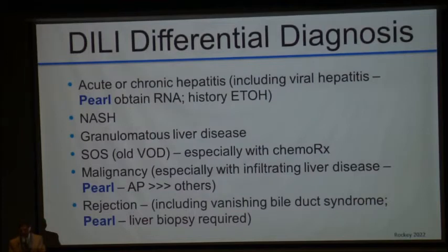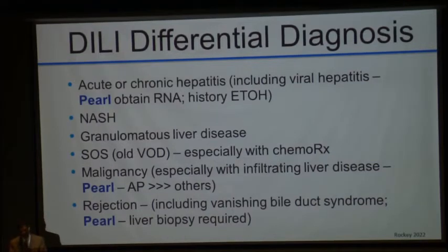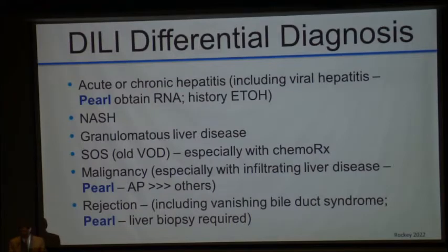A couple of pearls: for acute or chronic hepatitis, you must obtain HCV RNA, not just an antibody. We've published a manuscript on cases where hepatitis C was missed because an antibody was obtained and not an RNA — so when I see a patient with abnormal liver tests, I ask for the RNA. NASH is a problem. Granulomatous liver diseases can sometimes mimic DILI. SOS, especially now with chemotherapeutic regimens, often comes up. Malignancy with infiltrated liver disease should be considered when alkaline phosphatase is elevated out of proportion. And in transplant patients, rejection is a problem.